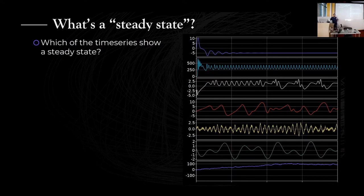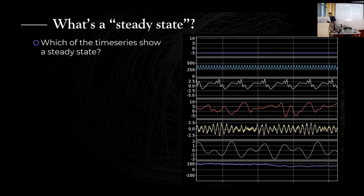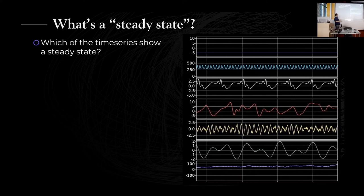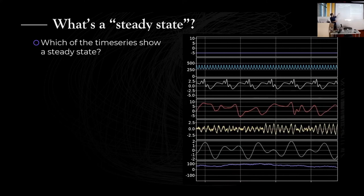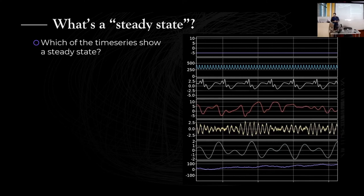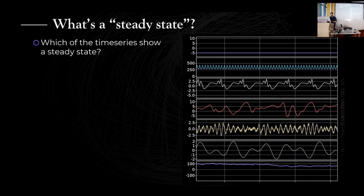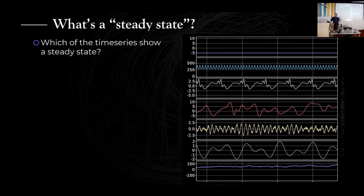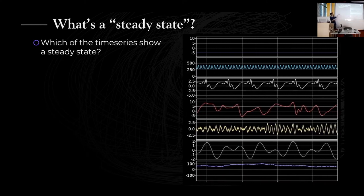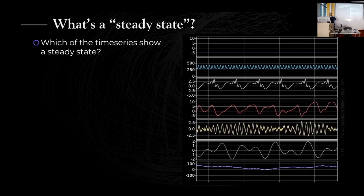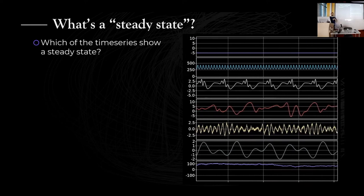Let's start with a motivating question: what's a steady state? That's a term I've heard many times, but I don't think it's so easy to pinpoint. I have some nice time series on the right side of the screen and I will now start animating how they evolve in time. Which of these time series would you say is steady state? If you think four or less of these time series are a steady state, raise your hand now.